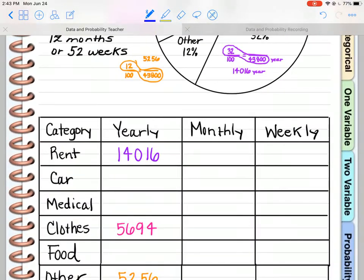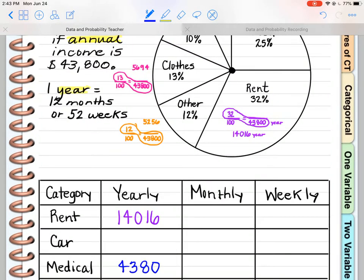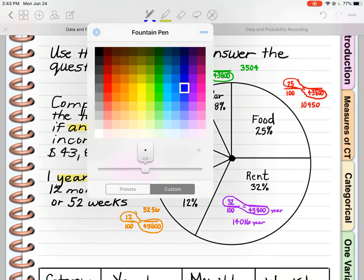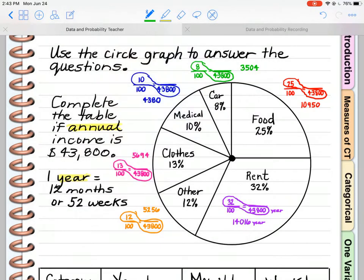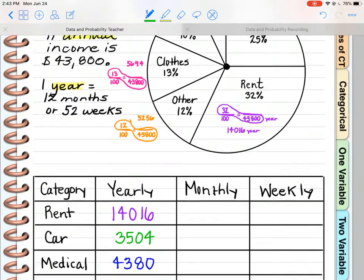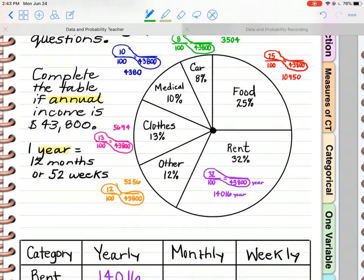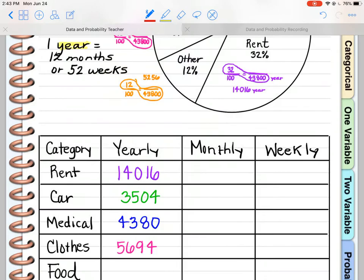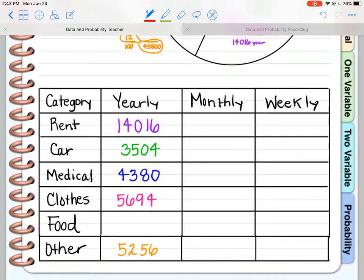Clothes $5,694. Medical $4,380. Car was $3,504. Food was one-fourth or $10,950. That should be all.